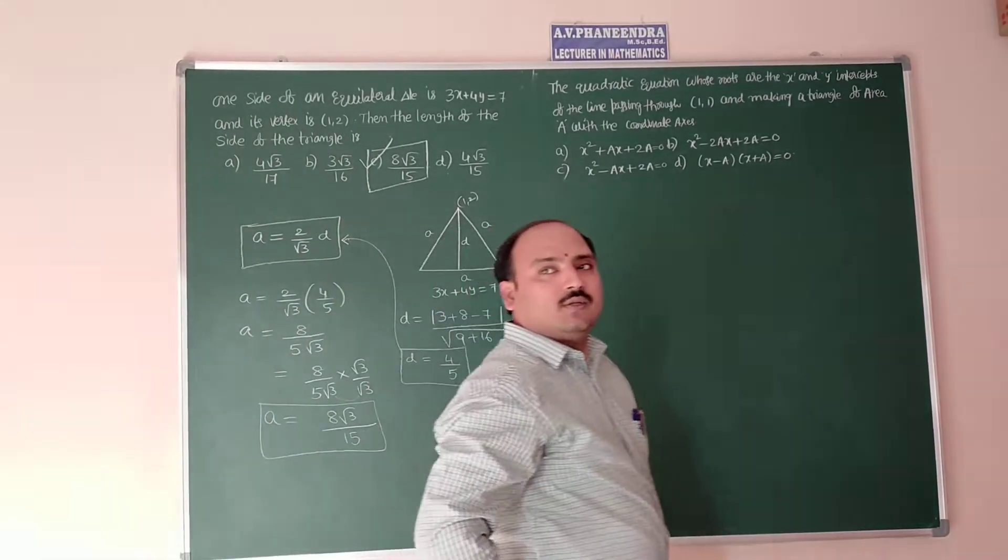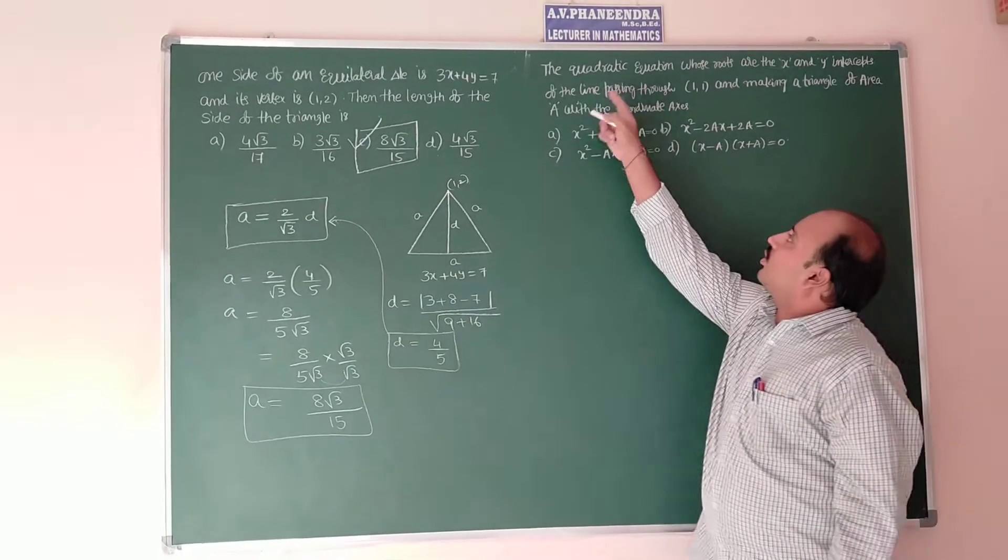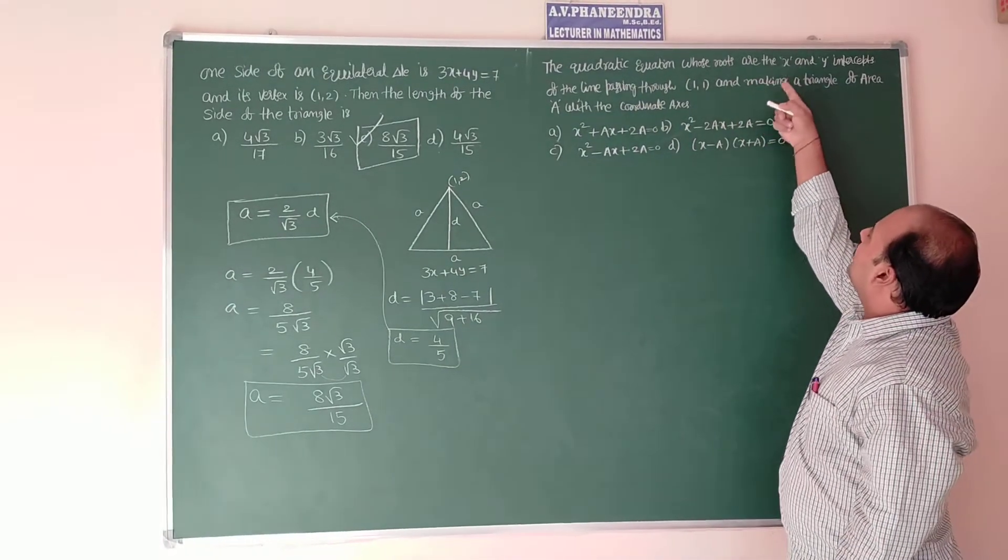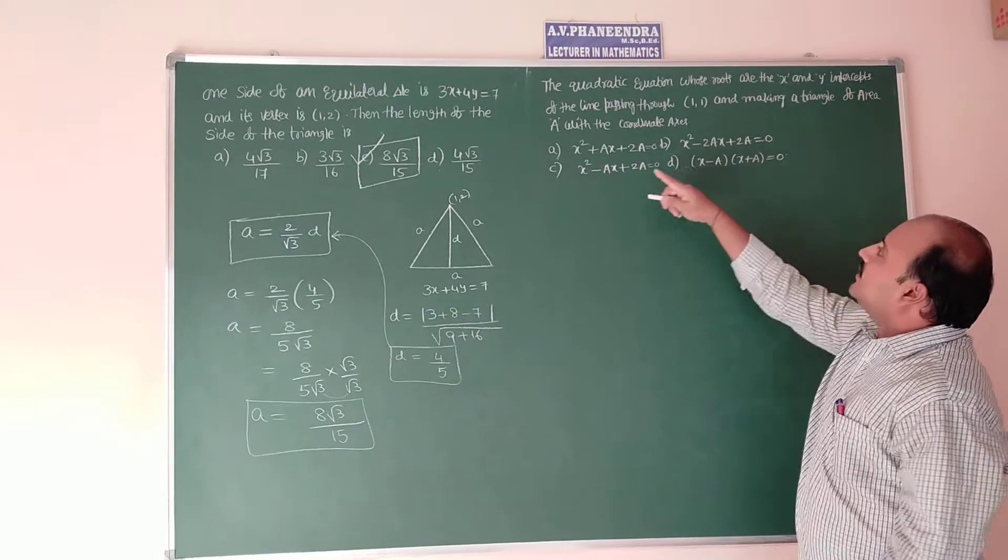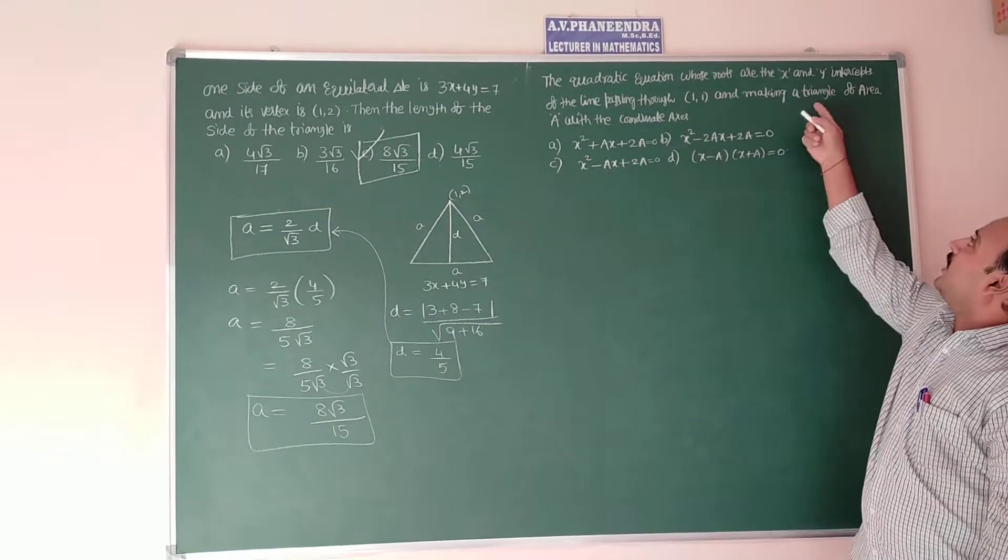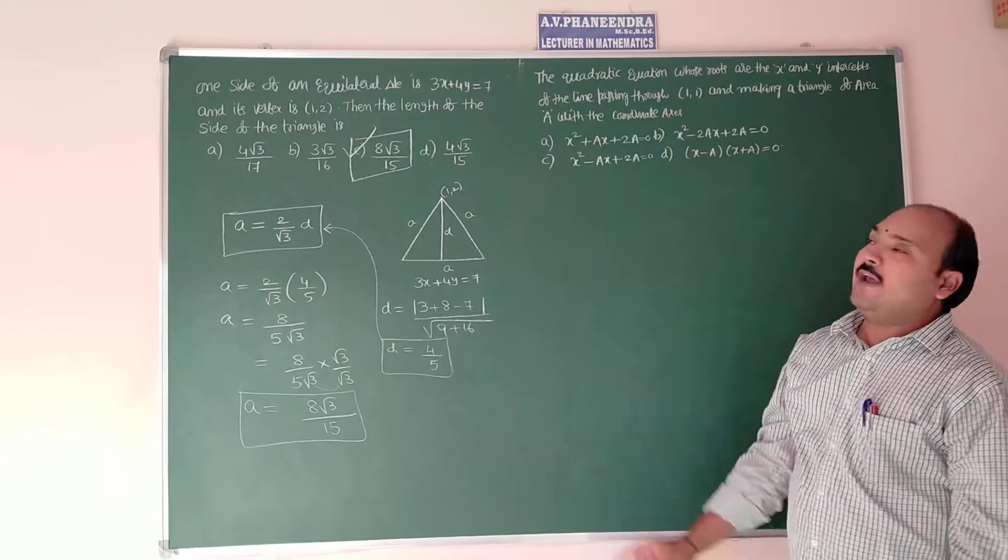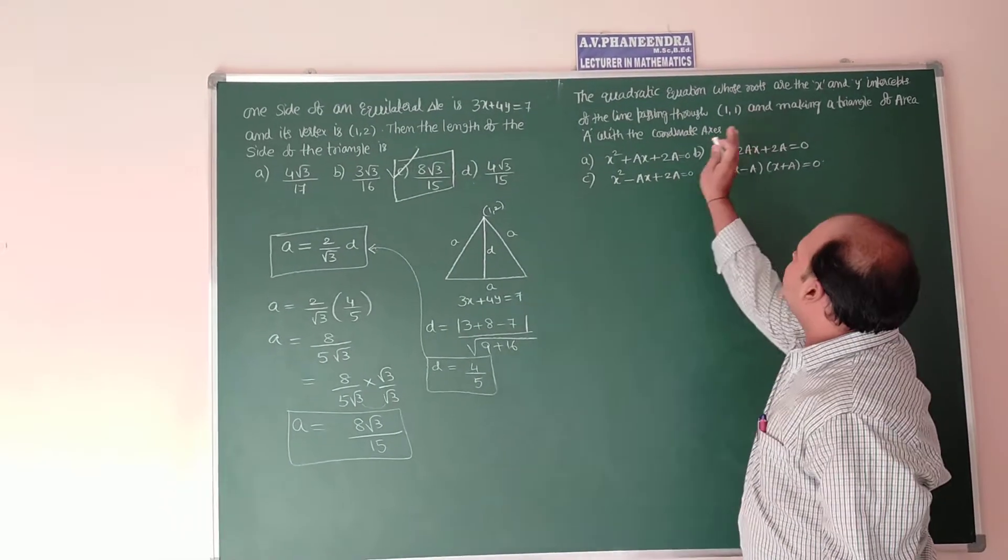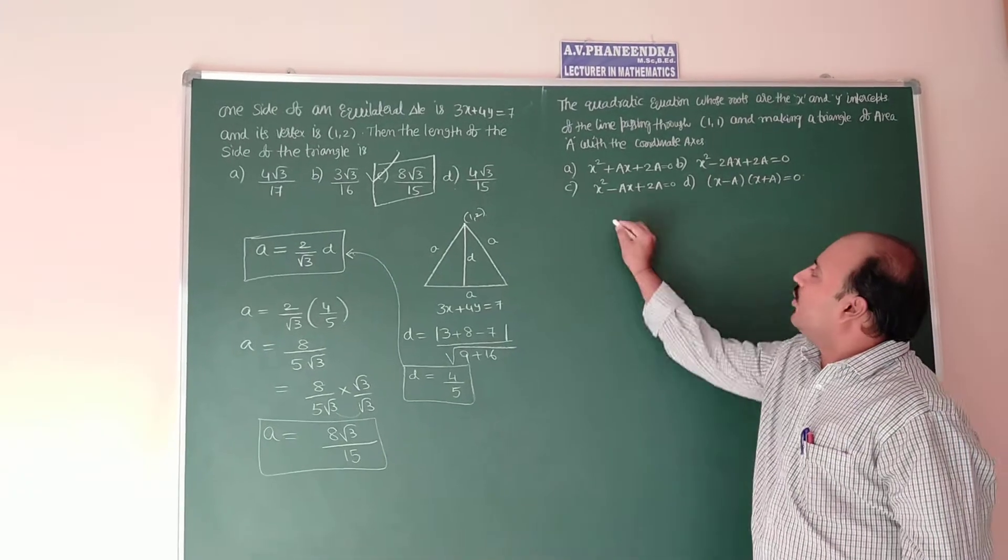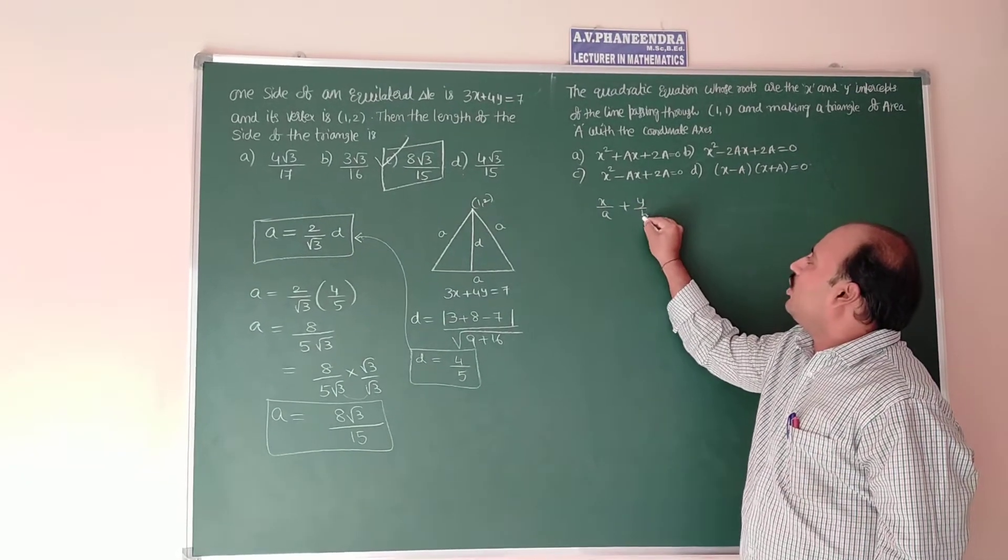One more question based on intercept form of straight line. The quadratic equation whose roots are the x and y intercepts of the line passing through 1,1 and making a triangle of area A with the coordinate axis. First intercept form they are saying, so what is the intercept form: x by A plus y by B equal to 1.